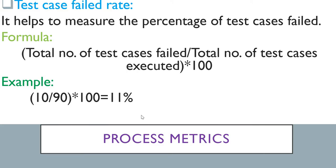Next is the fail rate. Besides the pass rate, you also need to know your fail rate. It helps to measure the percentage of test cases failed. The formula is: total number of test cases failed divided by total number of test cases executed, multiplied by 100. For example, 10 failed out of 90 executed equals 11% fail rate.